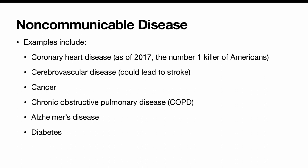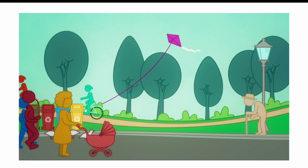Let's talk about non-communicable disease. Coronary heart disease was the number one killer of Americans as of 2017. We also have cerebrovascular disease, which can lead to stroke, cancer, chronic obstructive pulmonary disease or COPD, Alzheimer's disease, Parkinson's disease, and diabetes. These are all non-communicable diseases. So if you're in a room with someone who has diabetes, you're not going to catch it from them.